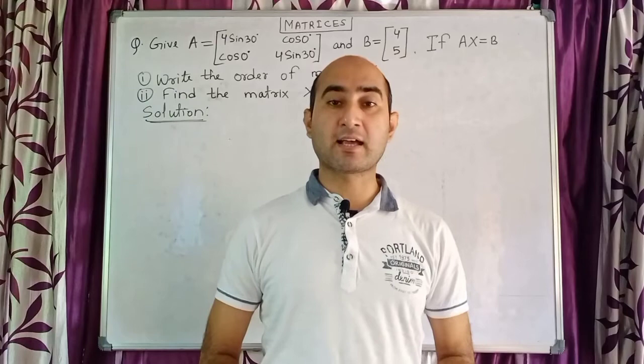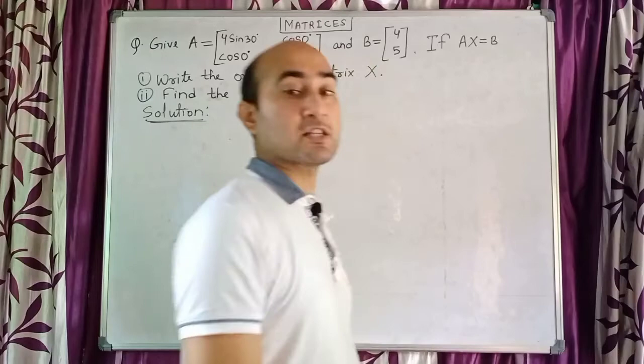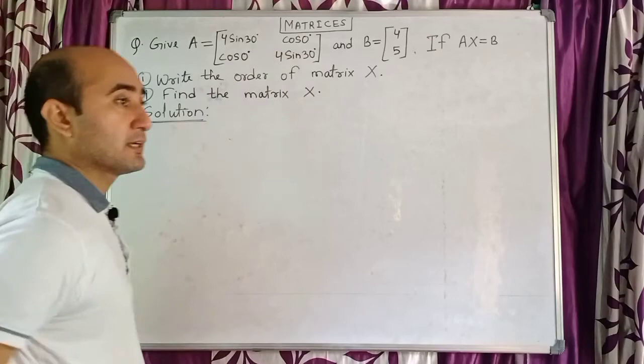Welcome to today's online class, class 10. Today we will be discussing chapter matrices, and I am going to discuss a new, different, and important question. So let us begin. We have given a matrix A as: 4 sin 30°, cos 0°, cos 0°, and 4 sin 30°.